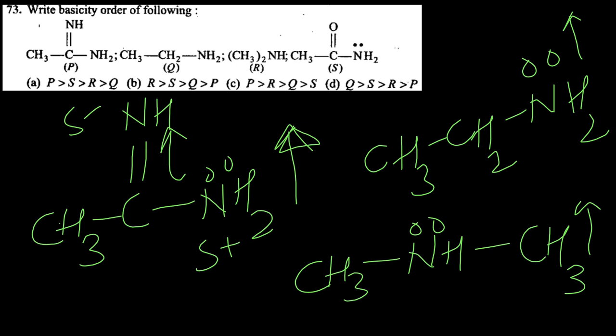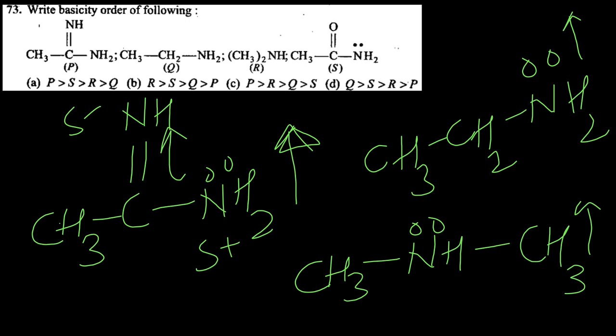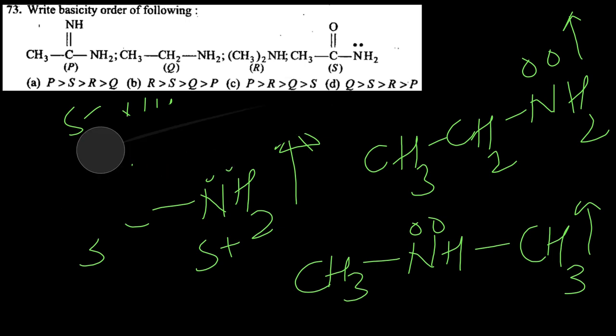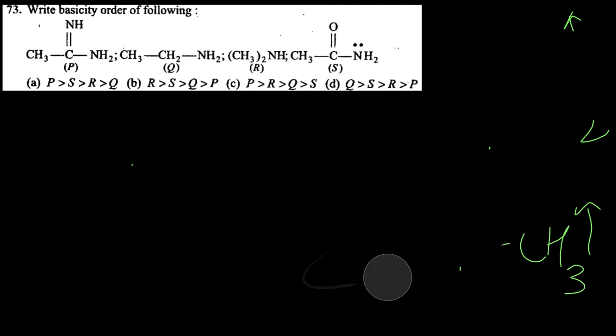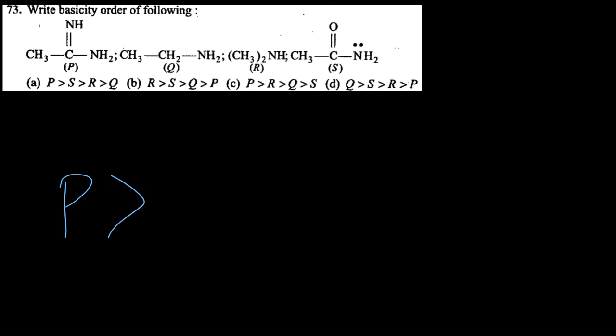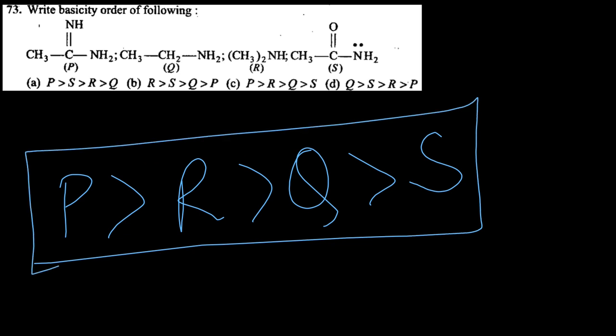Coming back to our question: option P is comparable to guanidine so P has the highest basic strength. After that comes R (secondary amine), then Q (primary amine), and S (amide) has very low basic strength. So the answer is option C.